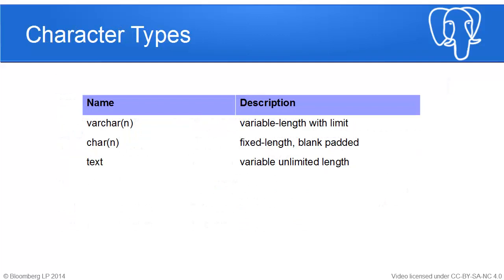For character types: varchar restricts the length; char restricts the length but zero-pads everything that's blank, which can result in weird LIKE queries; and text lets you store as much as you want — up to one gigabyte per field. All three map to the same internal function called varlen. The Postgres community generally recommends using text, though that might open you to people shoving gigabytes of data into it, which is why you might want to limit some character fields.